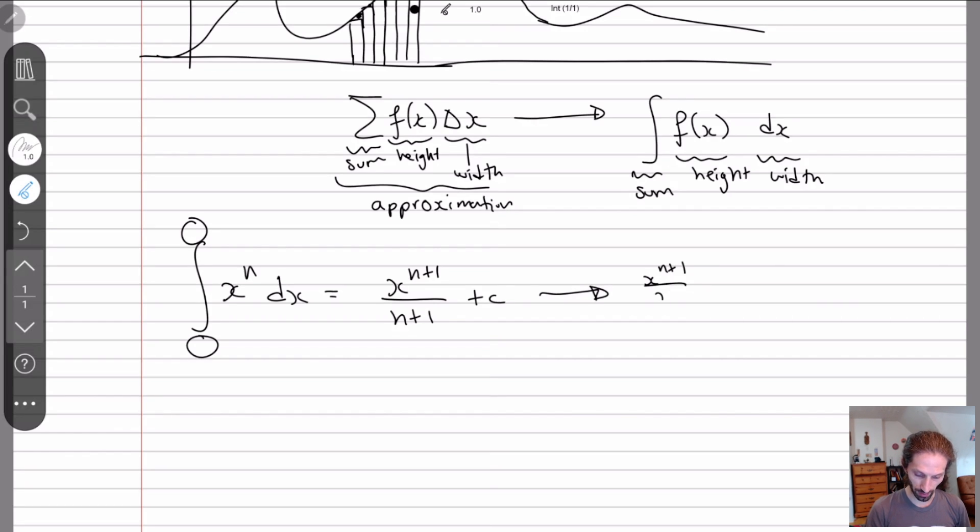The way to kind of always double check your work, if you're better at derivatives, is to just take the derivative. So x^(n+1)/(n+1) + c gets sent to, so here we have to multiply by the exponent and subtract one by the exponent. And then the plus c, the derivative of a constant is zero. These cancel and we get x^n. So this is how we verify that things are okay.